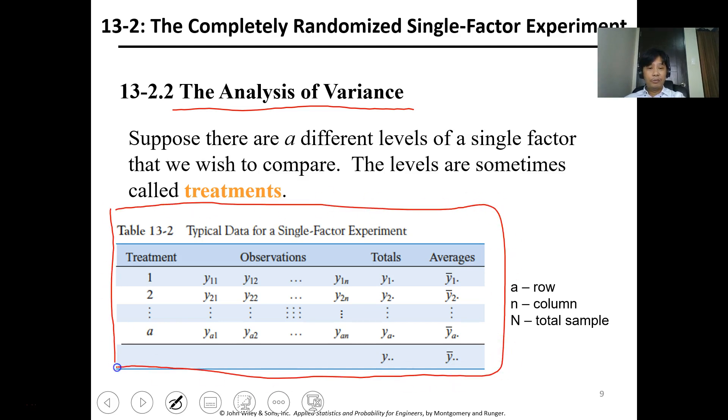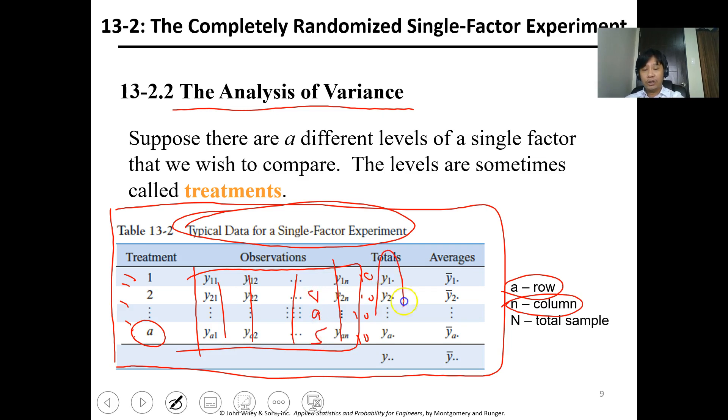For the completely randomized single-factor experiment, we need to identify the treatments and observations. The typical table has treatments, where 'a' is the number of rows and 'n' is the number of columns—how many observations. Usually they have the same number. Then you have the totals and the averages. The levels are the treatments, and n total is the total number of samples, which is n times a.